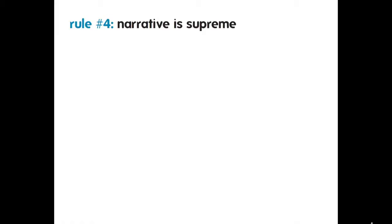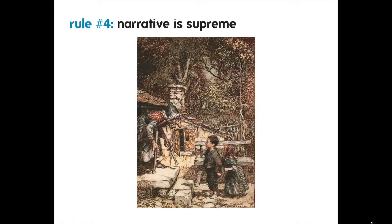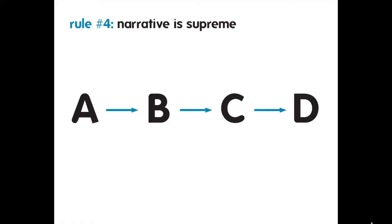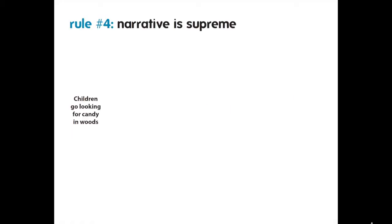Rule number four is that narrative is supreme. A clear narrative helps organize and frame your research, and allows you to take a complicated set of social and policy phenomena and develop a progression of relationships that clearly connect your introduction to the conclusion. Think about an example like Hansel and Gretel — it has a very clear, concise narrative with a set of actors and a set of preferences or desires. The narrative leads the viewer from the beginning to the conclusion, step by step.